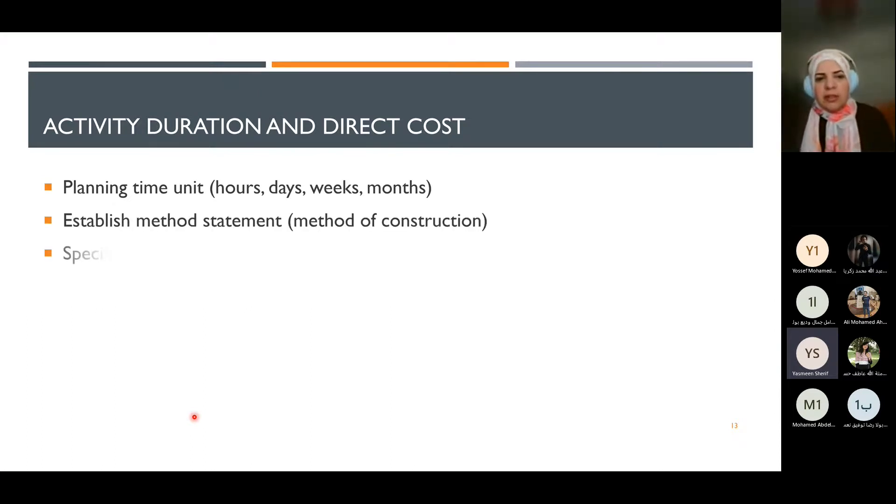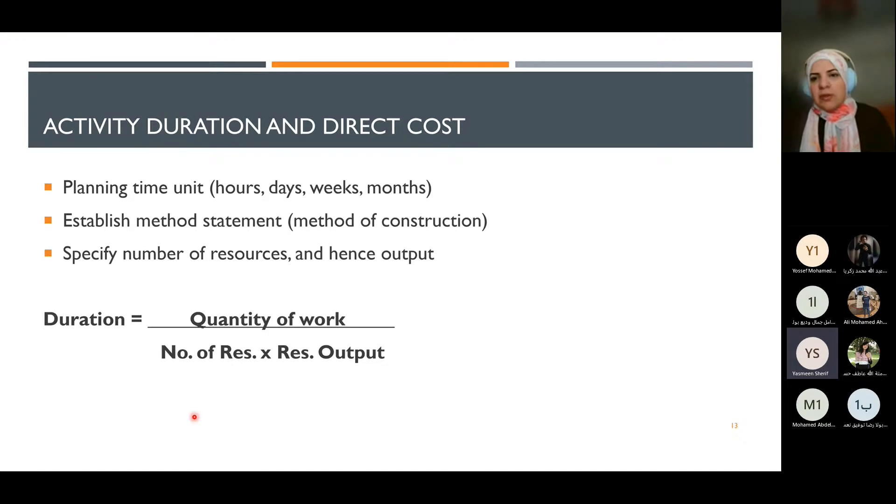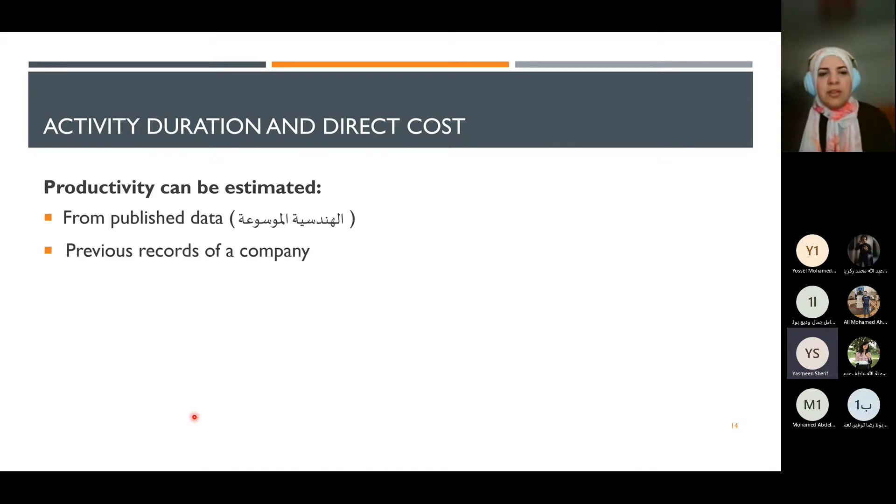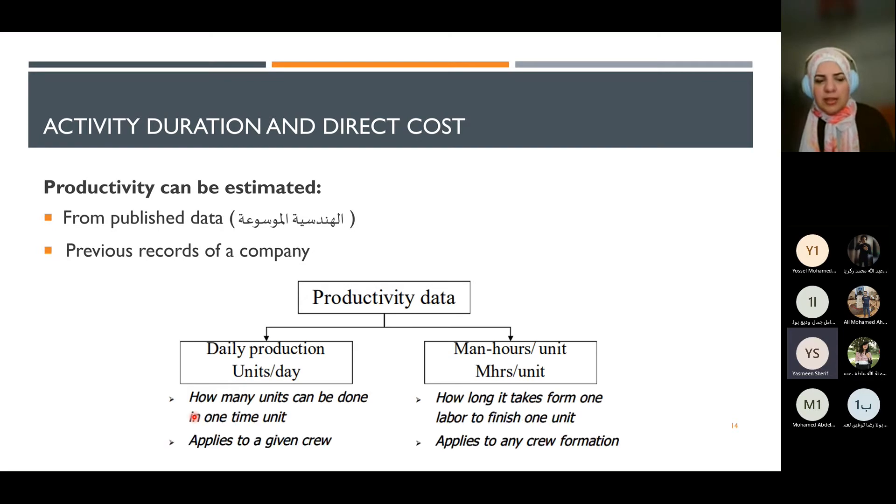Activity duration is calculated using this equation: duration equals quantity divided by number of resources times productivity. We obtain productivity values from previous company records or industry research. It's expressed in units per day or hours per unit, depending on the resource type.